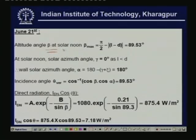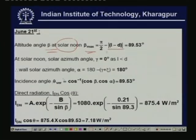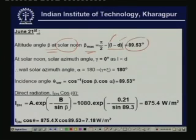Since we are doing calculations at solar noon, beta equals beta_max, given by pi/2 minus the absolute value of L minus D, where L is the latitude and D is the declination. The altitude angle works out to be 89.53 degrees.